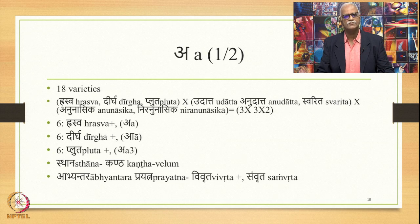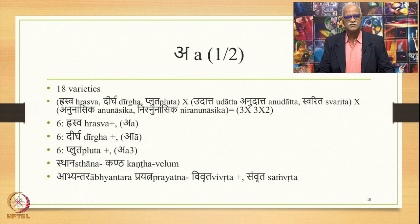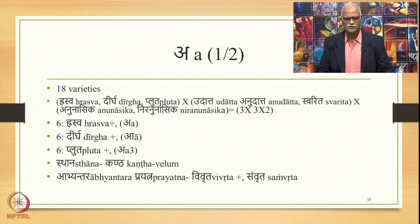Let us now look at each vowel. Vowel A has 18 varieties — there are 18 sounds. As shown, the number 18 is arrived at as follows: there are 3 varieties as far as length is concerned — raswa (short vowel, 1 matra), dirgha (long vowel, 2 matras), and pluta (prolated, 3 matras).